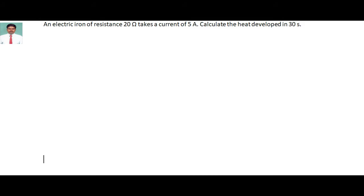So given values: the resistance R is equal to 20 ohms, the current I is equal to 5 ampere, and the time T is equal to 30 seconds.